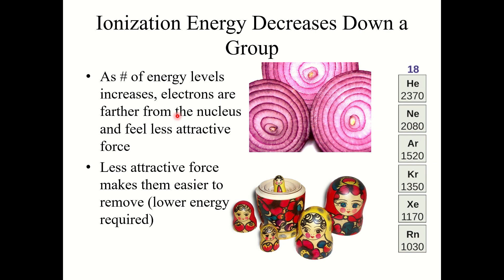The reverse trend occurs going down a group. As you go down a group, the atoms are getting bigger, so those outer electrons are further and further away from the nucleus, meaning there is less attractive force — making them easier to remove and requiring lower energy. For example, looking at the noble gases, going from helium down to radon, ionization energy decreases because the atoms are larger, the outer electrons are farther from the nucleus, and they feel less attractive force.